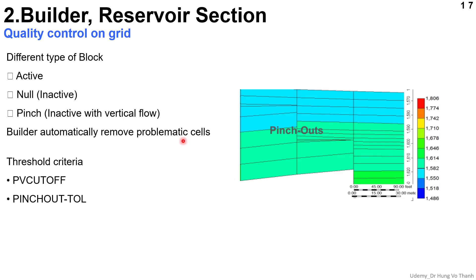The last section of the reservoir session is quality control on grid cells. When you import from a Petrel model, RMS, or GoCad, some changes are needed for the reservoir simulation model. There may be some active or inactive grid cells, or even inactive cells with vertical flow connections. The Builder automatically removes problematic cells. Using the two keywords PVCutup and PLTOL, there are screening criteria to remove unnecessary cells from your model.